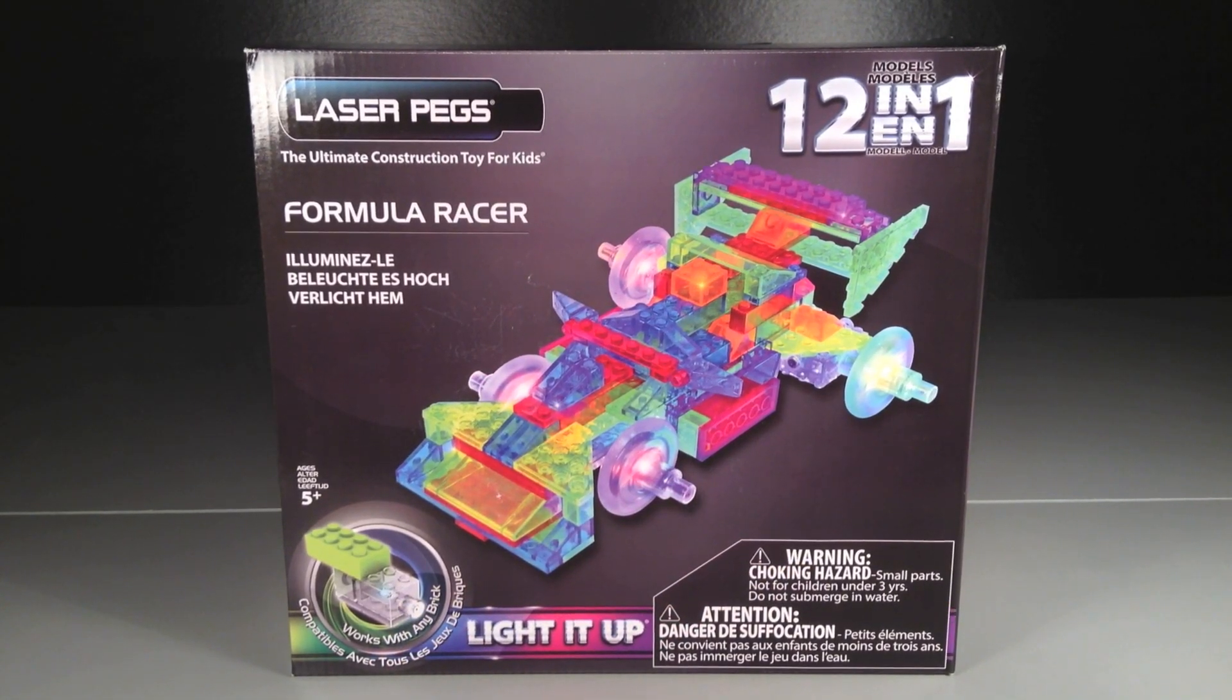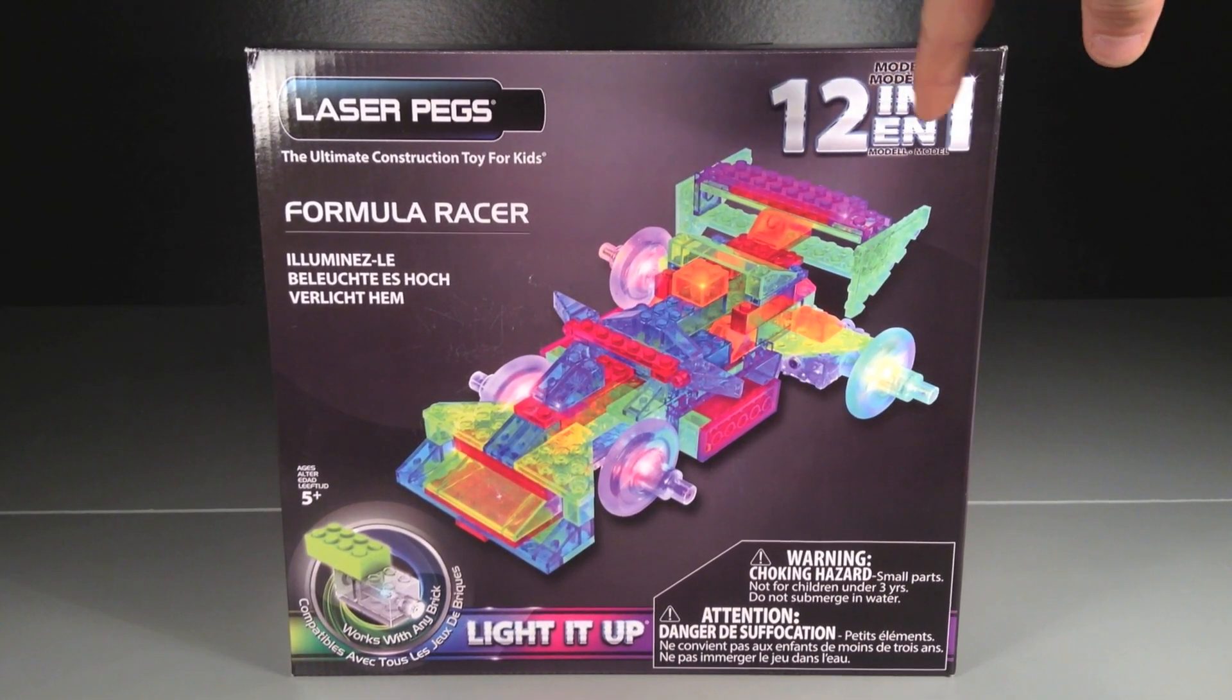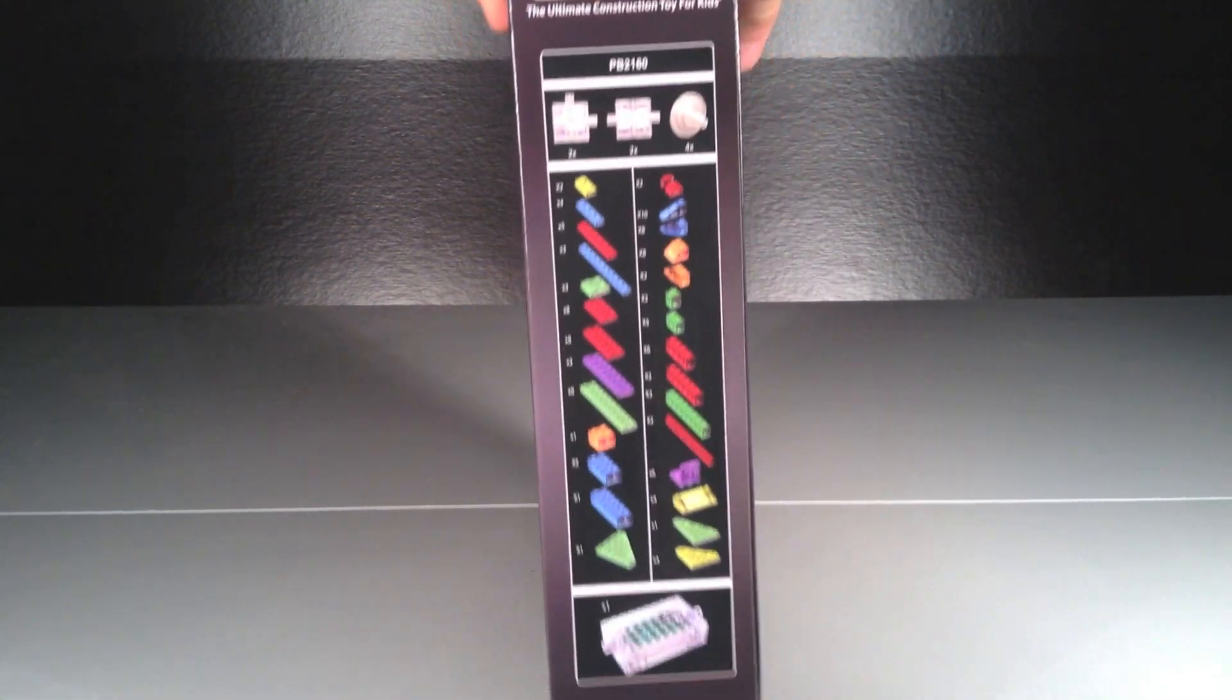Here is our box. Taking a look at the front, it basically shows what comes in the set. You can see the Formula Racer right here. It's a 12-in-1 set, so you can build 12 different models, and they are online. You can see the parts that come in the set on the side, which is a really cool added thing that they put on there.